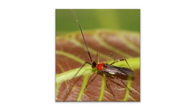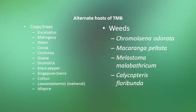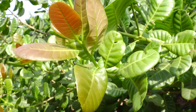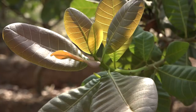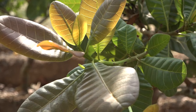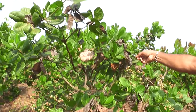The adults live for about 10 to 20 days and the total life cycle is 20 to 30 days. Tea mosquito bug is polyphagous in habit and the nymphs and adults feed on a wide variety of crop plants and also on some weed plants in the cashew plantations.